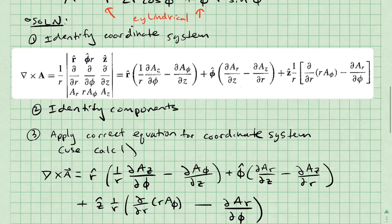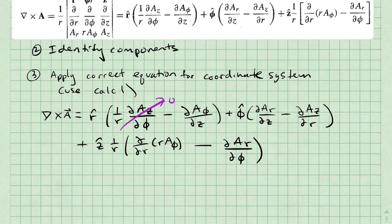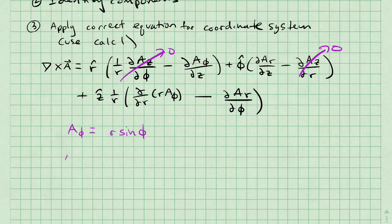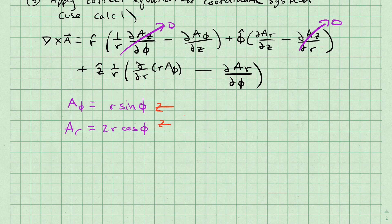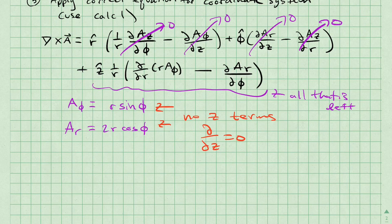Now let's look back at our identified components. The first thing we notice is that there is not an a sub z. Since that is true, any term involving a sub z is zero. We also notice that both of the other terms do not contain any z terms, so their partial derivative with respect to z is also zero. That means that the z-hat component is the only part we will have left to calculate.